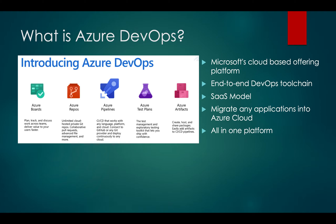With Azure Pipelines, you can automate your build process, deployment process, and testing process. Then there is Azure Test Plans, mainly for the QA team to plan test automation. Azure Artifacts is similar to Nexus or Artifactory — you can store artifacts and use them in your pipeline before deploying to Azure cloud.